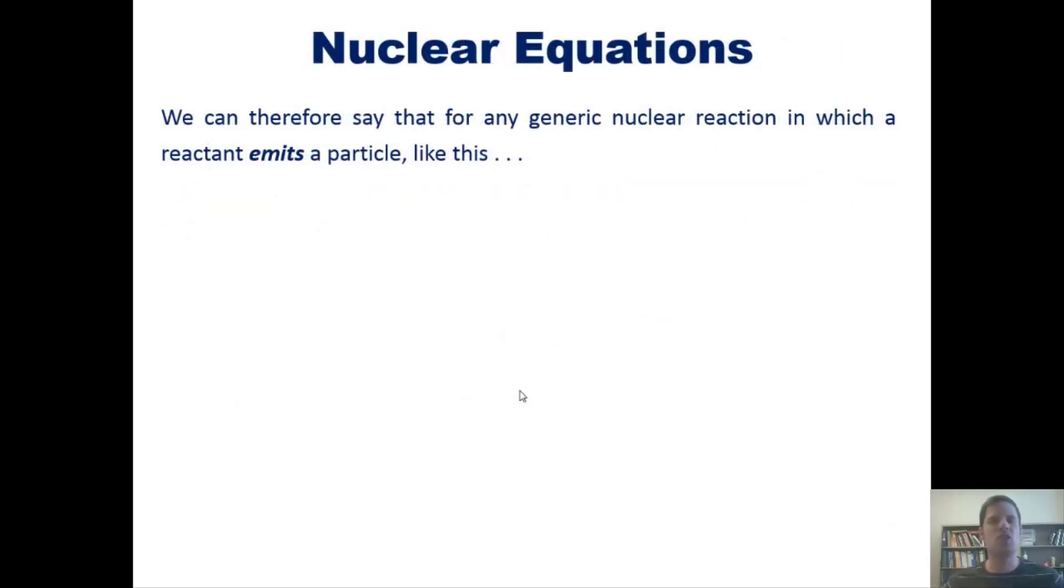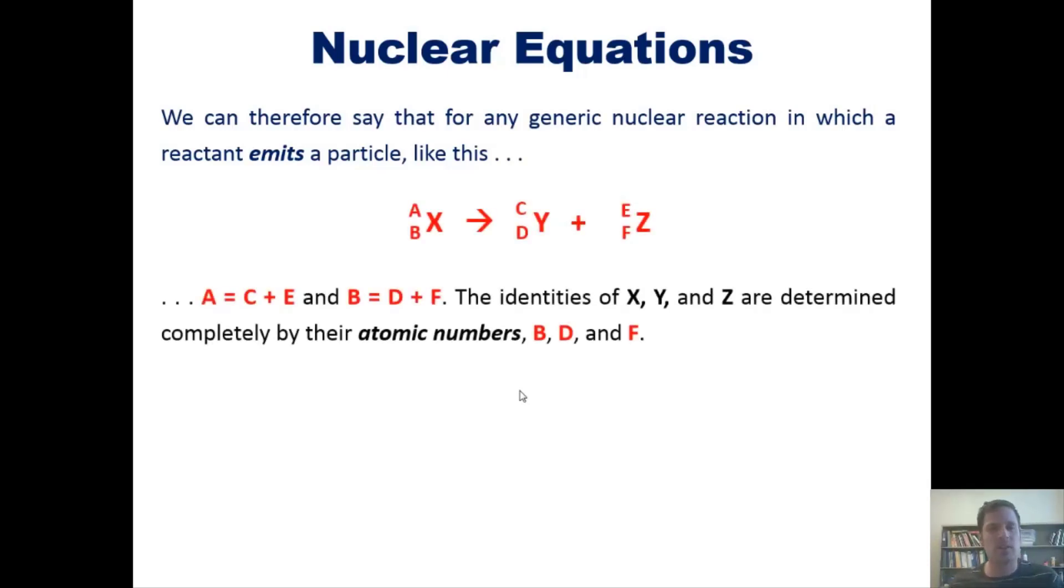We can say then that for any generic nuclear reaction in which a reactant emits a particle, the superscript A equals C plus E, and the subscript B equals D plus F. The identities of X, Y, and Z are determined completely by their atomic numbers B, D, and F.